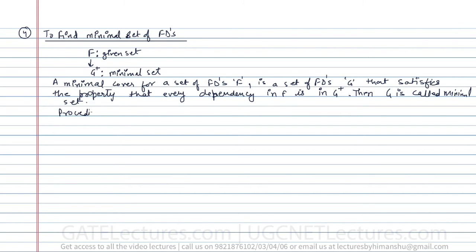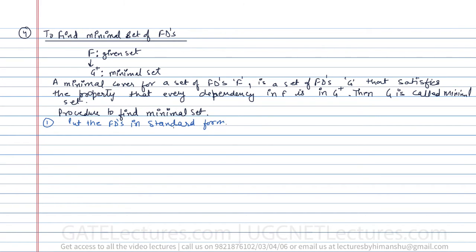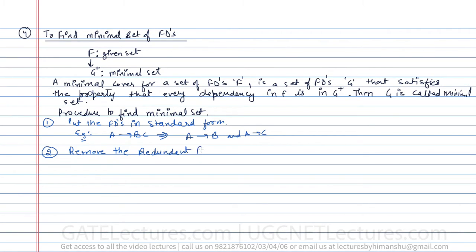Let us write the procedure to find the minimal set. Step one: put the functional dependencies in standard form. For example, if A determines BC, convert it to A determines B and A determines C — split each right-hand side into single attributes.